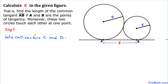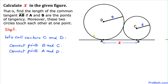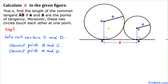Let's get started. I'm going to call the center of the smaller circle C and the center of the bigger circle D. Let's go ahead and connect points B and C, and likewise connect points A and D. Here is our figure once we have connected B to C and A to D.